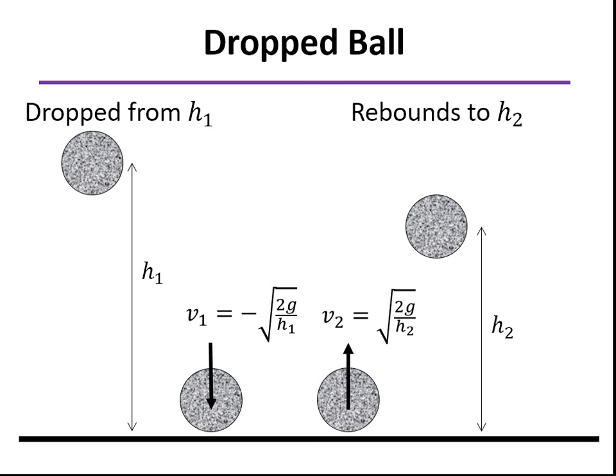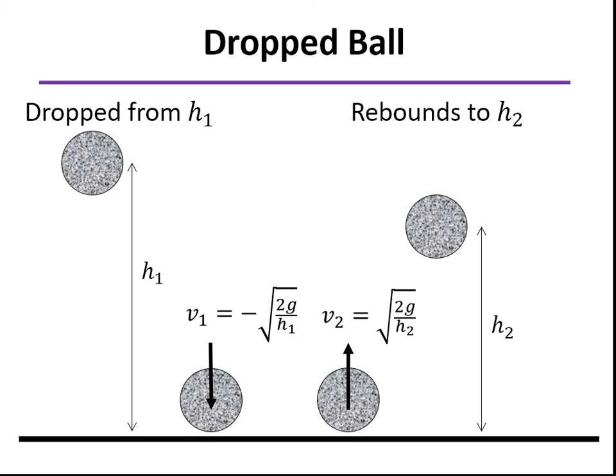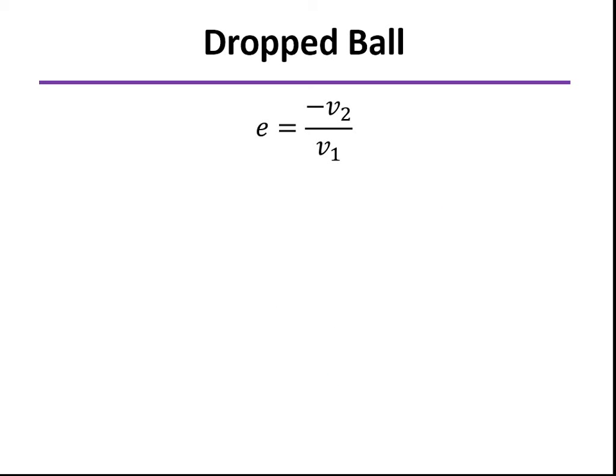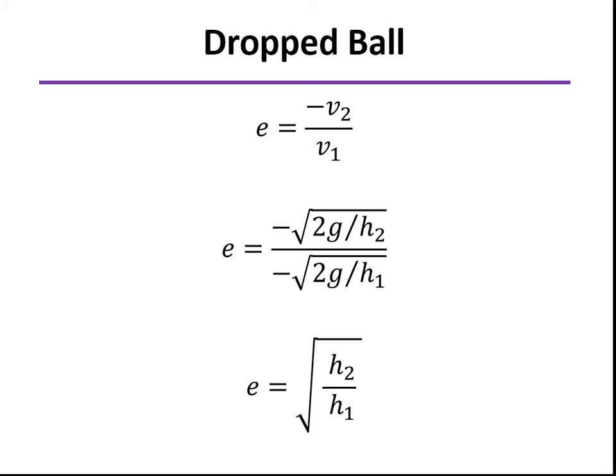Right after the bounce, the velocity is the square root of 2g times h2. If we plug those values back into our equation for the coefficient of restitution, a lot of things cancel out, and what we end up with is the square root of h2 over h1 as our coefficient of restitution.